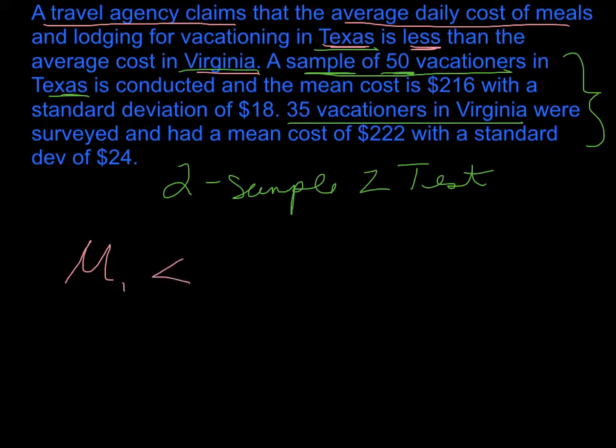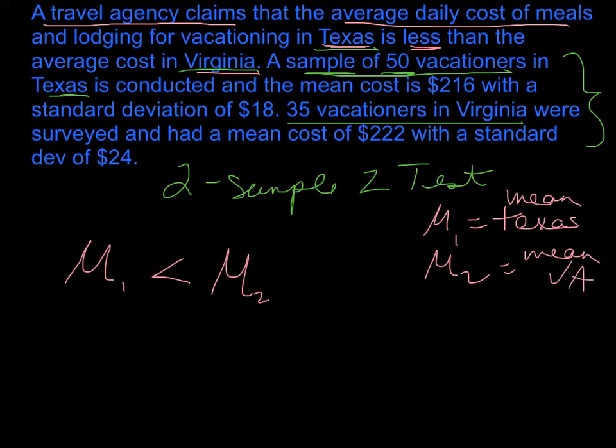They're saying that's less than the mean average cost for Virginia. So we're defining μ₁ as the mean cost for Texas, and μ₂ is the mean cost for Virginia. The complement to that would be the opposite - the opposite of being less than is greater than or equal to.